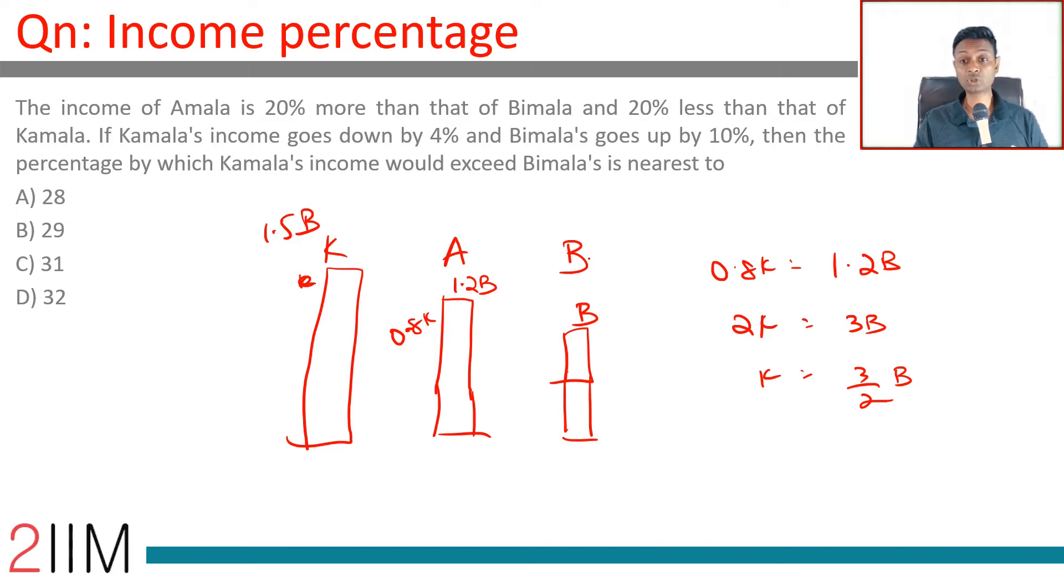If Kamala's income goes down by 4% and Bimala's goes up by 10%, then the percentage by which Kamala's income would exceed Bimala's income is nearest to. Bimala's goes up by 10%, so Bimala's new income would be 1.1B. Kamala's goes down by 4%.